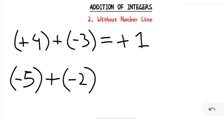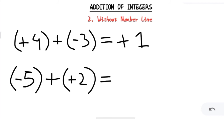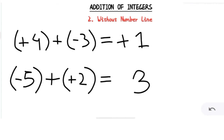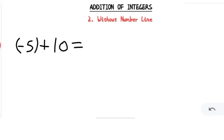Let's take another example: (-5) + (+2). Again we have two different signs — one negative, one positive — so we do subtraction: 5 minus 2 is 3. Now, which sign do we put? Between 5 and 2, which is bigger? 5 is bigger — we only consider the value, not the sign. Since 5 is bigger and carries a negative sign, our answer is -3.